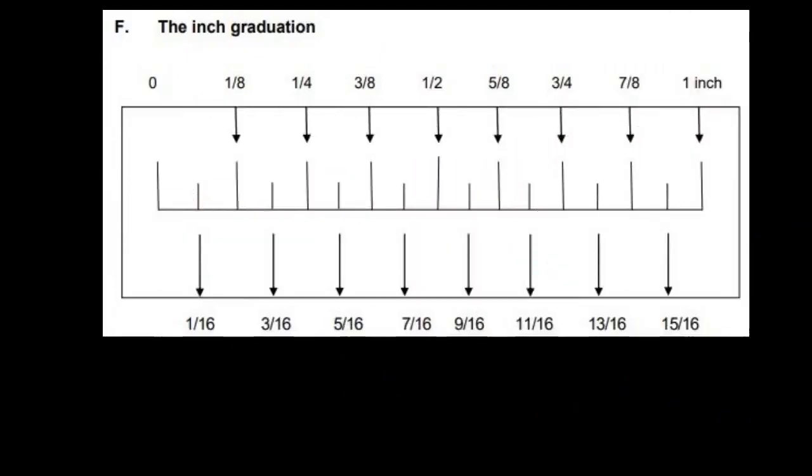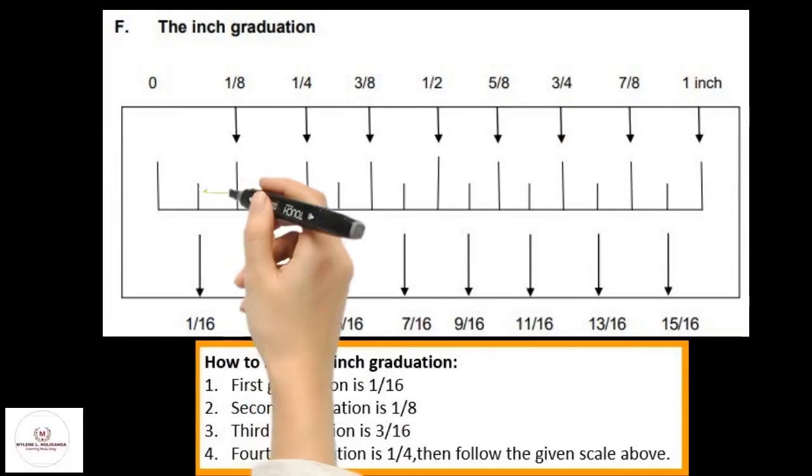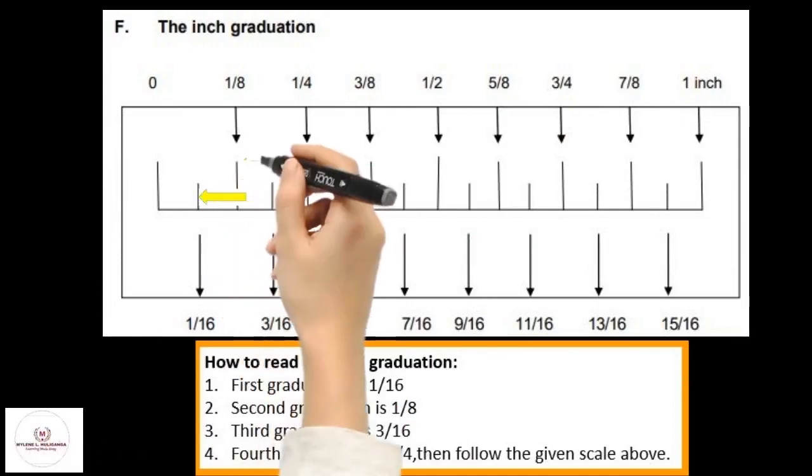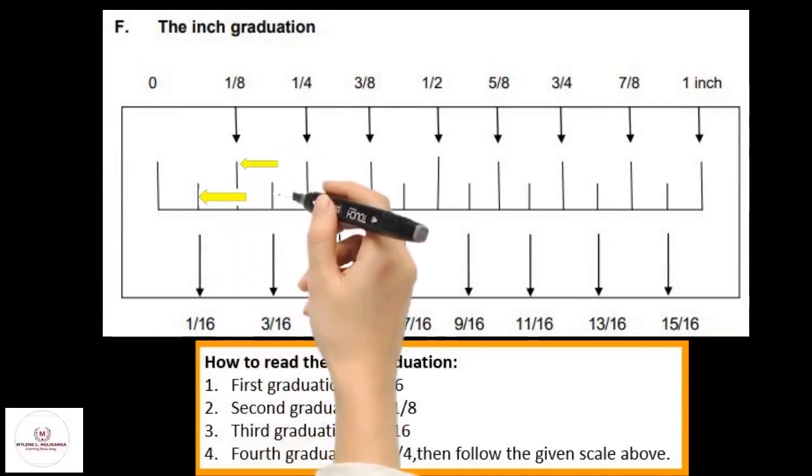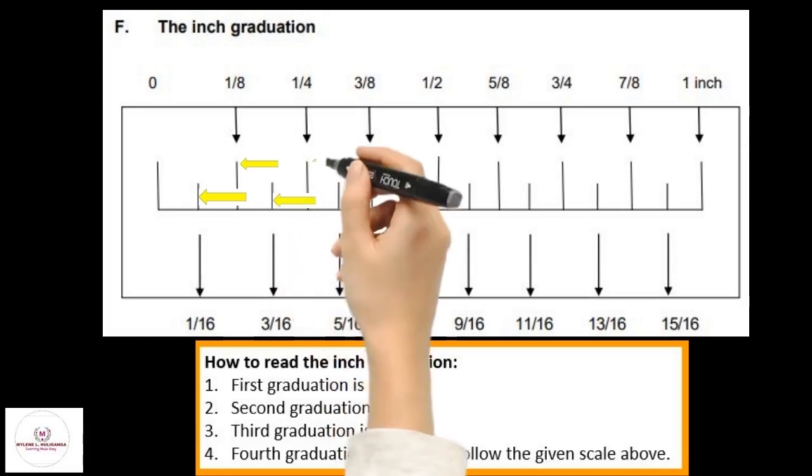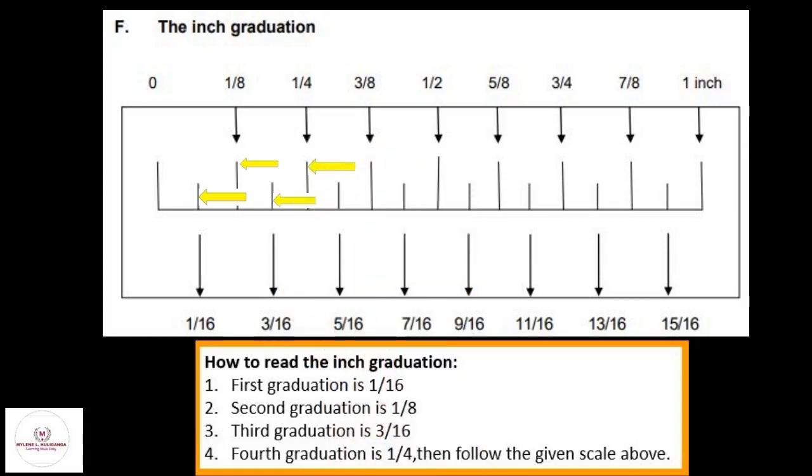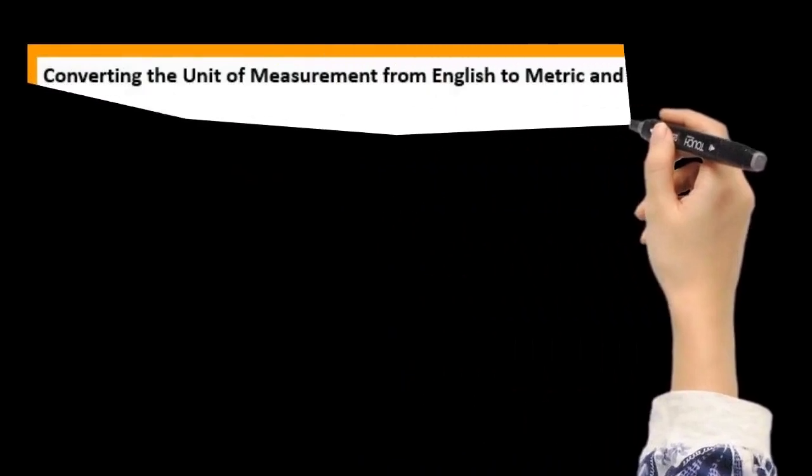How to read the inch graduation: the first graduation is 1/16, the second graduation is 1/8, the third graduation is 3/16, the fourth graduation is 1/4. Then follow the given scale of converting the unit of measurement from English to metric and vice versa.